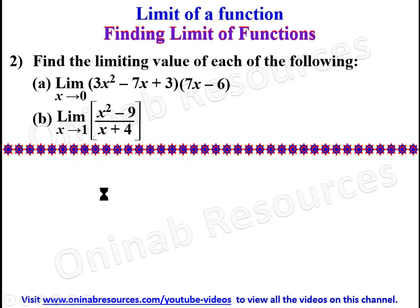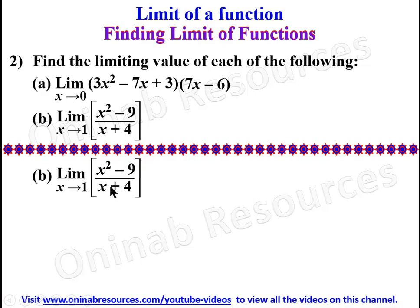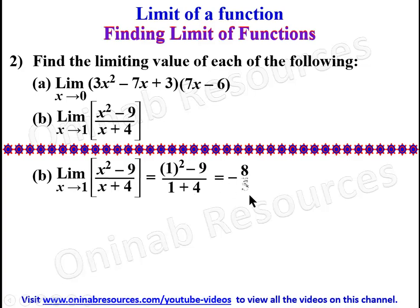For part B of problem 2: the limit of (x² minus 9) over (x plus 4) as x tends to 1. This is a quotient of two functions. Substituting directly: (1² minus 9) over (1 plus 4), which is 1 minus 9 over 5, giving negative 8 over 5. So negative 8 over 5 is the limiting value of the function in problem 2B.